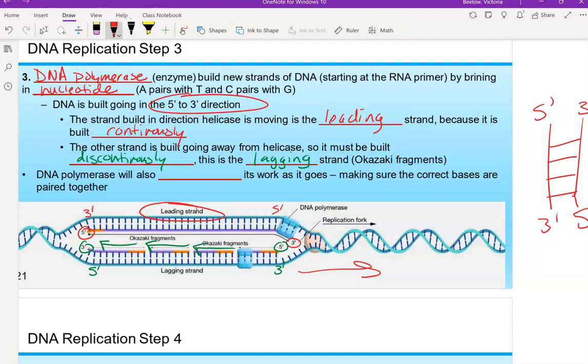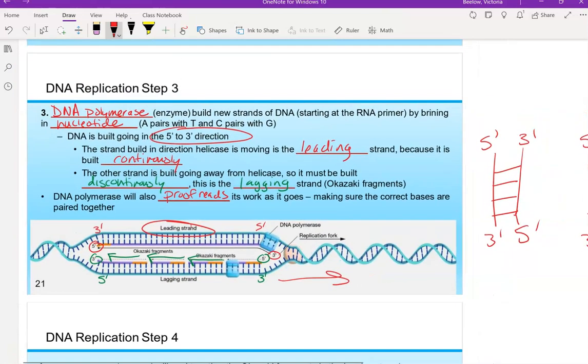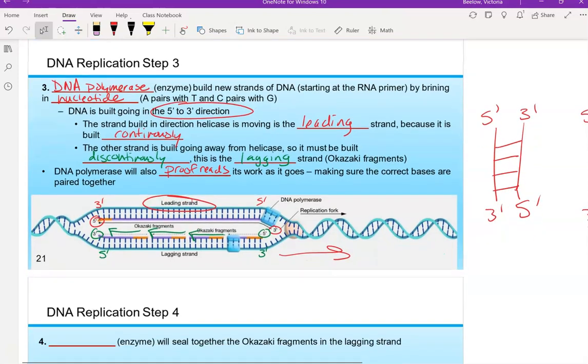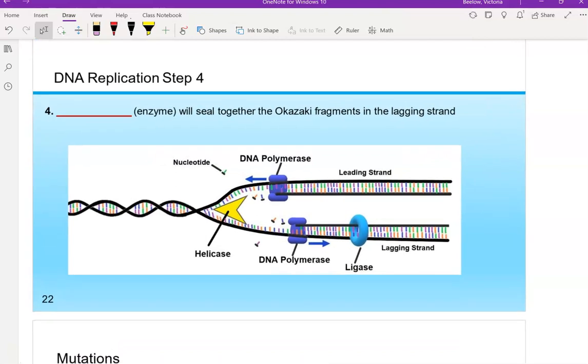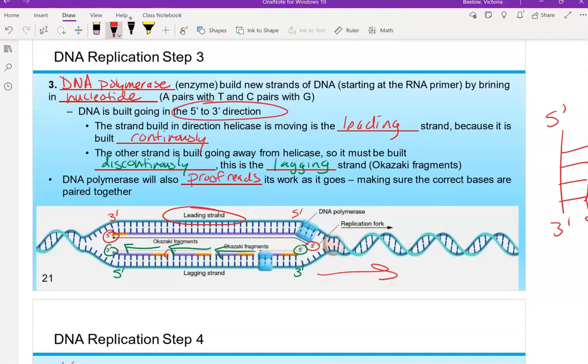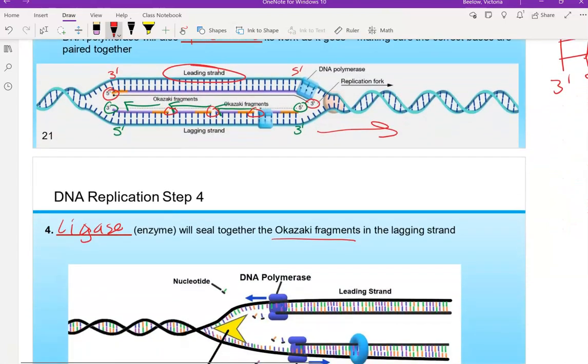DNA polymerase, not only is it building a new strand of DNA, but it also proofreads as it goes to make sure that things are being paired correctly together. There are some other enzymes that will also double check to make sure everything is paired correctly. And if not, DNA polymerase can go back in and swap out bases to make sure things are paired correctly together. Now, remember the lagging strand is built in pieces. They're called Okazaki fragments. Those have to be sealed together. So the enzyme that seals everything together is called ligase. You can see that here. It's going to seal together all of these gaps that we're seeing in the lagging strand.